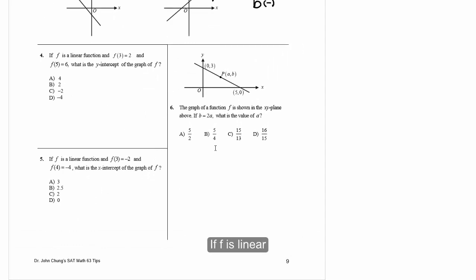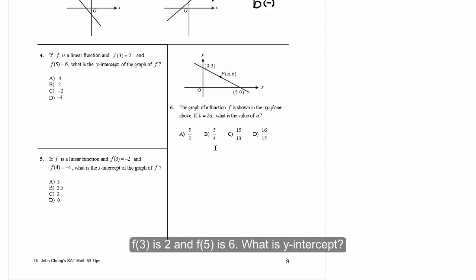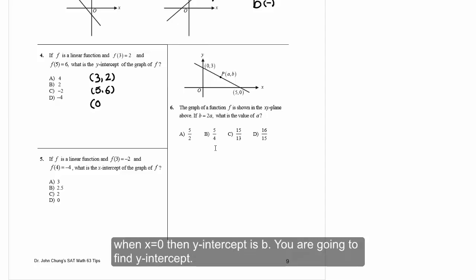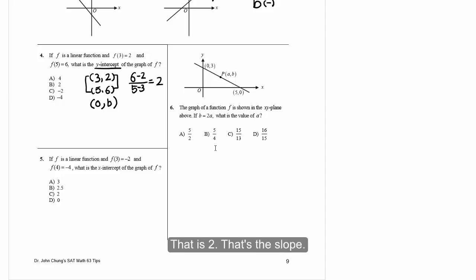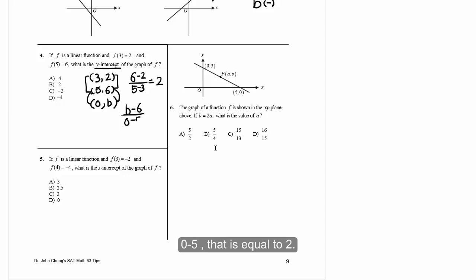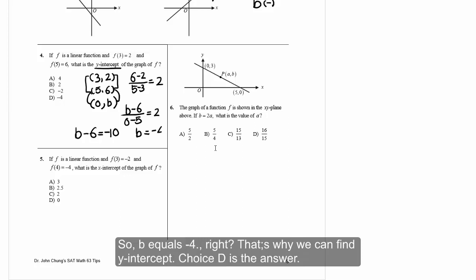Number four: If f is linear, f(3) = 2 and f(5) = 6, what is the y-intercept? We have three points: x=3, y=2; x=5, y=6; x=0, y=B. Find slope: (6-2)/(5-3) = 2. Now use points (5,6) and (0,B): (B-6)/(0-5) = 2. So B minus 6 equals negative 10, and B equals negative 4. Choice D is the answer.